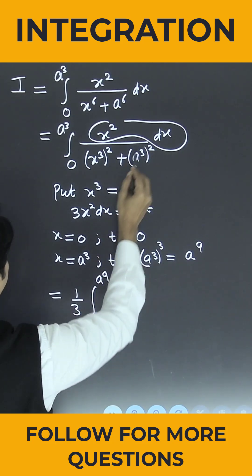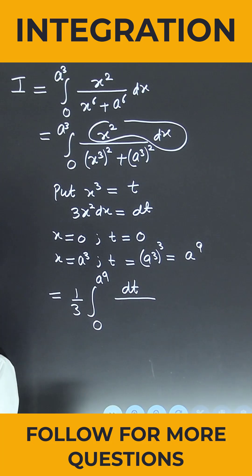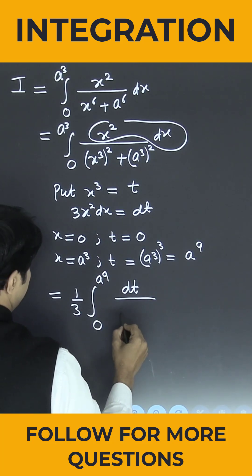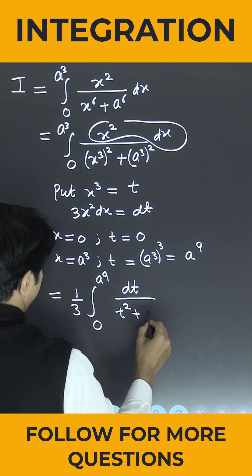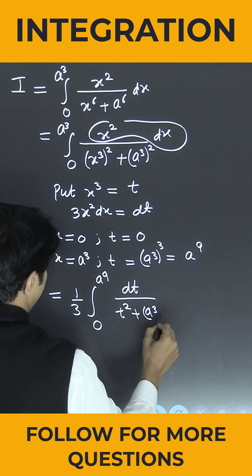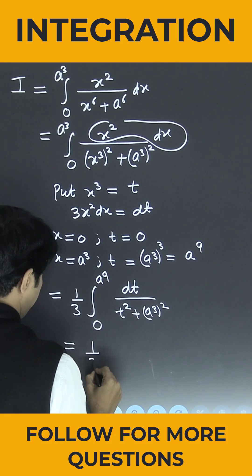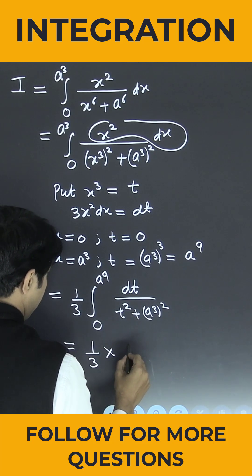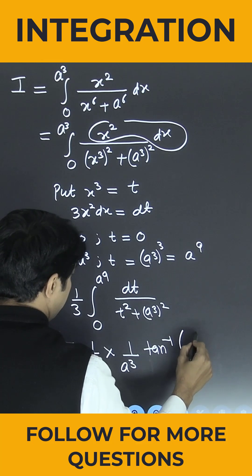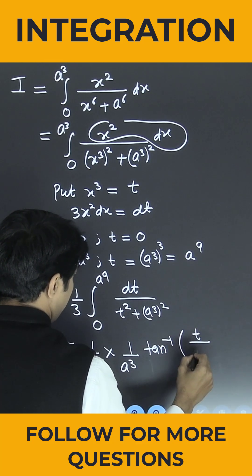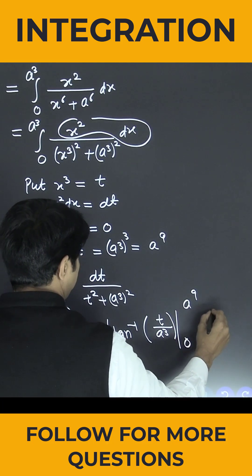So x² dx is nothing but dt, and the denominator becomes t² + (a³)², which is t² + a⁶ whole square. Let me use the standard formula. This is nothing but 1/3 into 1/(a³), which gives tan inverse of t/a³, with limits from 0 to a⁹.